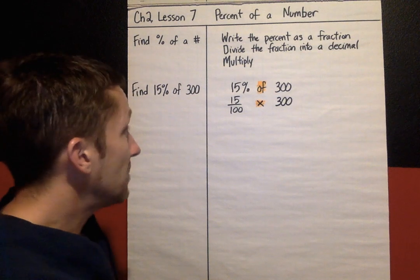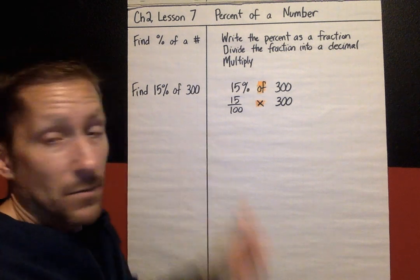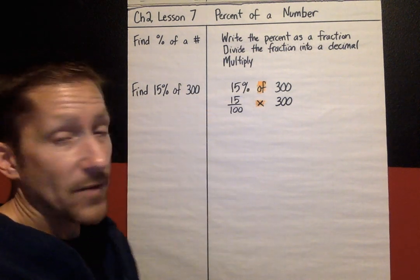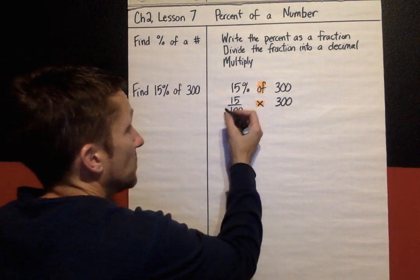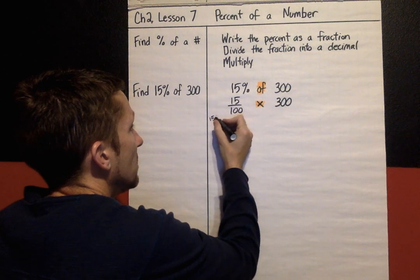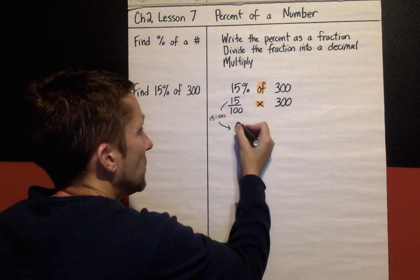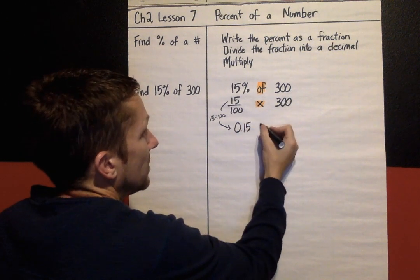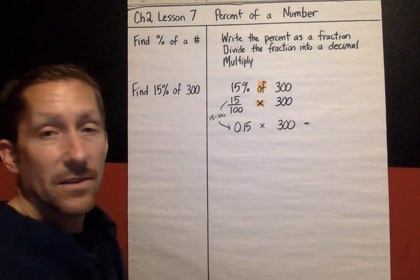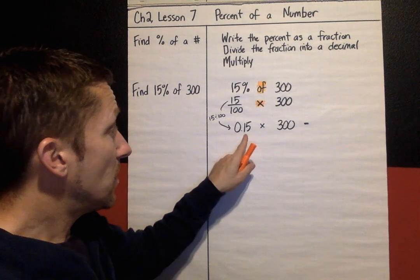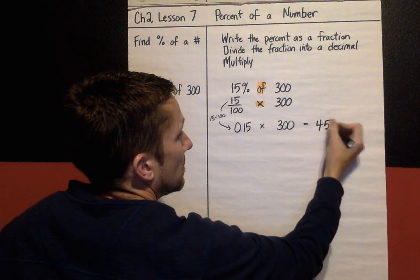The next step is I'm going to divide the fraction into a decimal. Anytime you have a fraction, you can divide numerator divided by denominator, and it's going to change it into a decimal. So I'm going to do 15 divided by 100 on my calculator, and that's going to give me 0.15 times 300. Now I'm ready to use my calculator. 0.15 times 300. My calculator says 45.